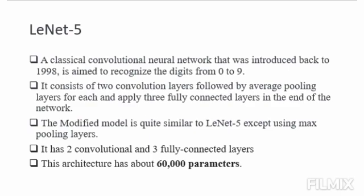The modified model is quite similar to LeNet-5 except using max pooling layers. It has two convolutional and three fully connected layers, hence the name. It is very common for the name of a neural network to be derived from the number of convolutional and fully connected layers it has. The average pooling layer, as we know it now, was called a subsampling layer and has a trainable weight, which isn't the current practice of designing CNNs. The architecture has about 60,000 parameters.